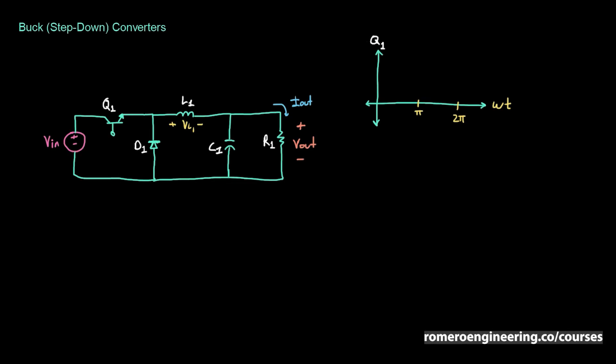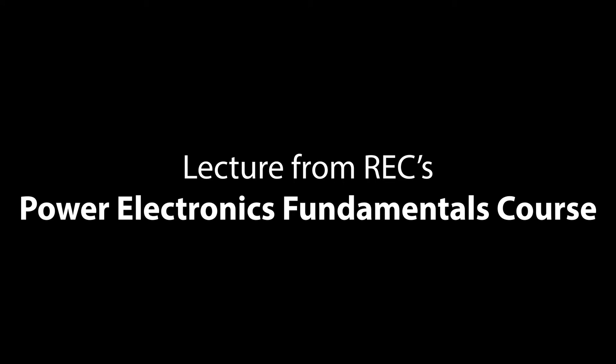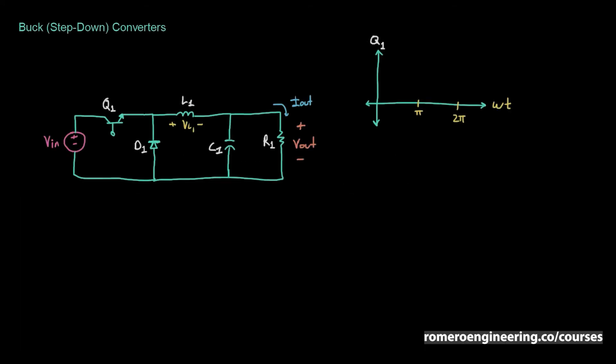In this lecture we're going to be talking about the buck or step-down converter. A buck converter is a device that steps the voltage down. For this example we're going to step the voltage V_in to a lower voltage at the output. The circuit for the buck converter has one power BJT, one diode, and an inductor and capacitor which help to filter out the output current ripple and the output voltage ripple.